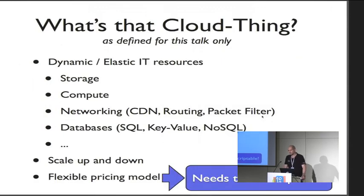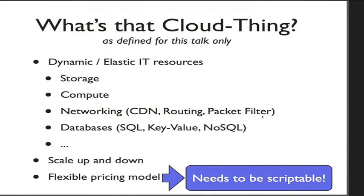Before we actually talk about Boto, two other little things. The first one is — humans like abstractions, so this word cloud is kind of a buzzword, and different people have different opinions of what it really means. So I defined it for this talk only. What I mean by that is that you have dynamic, or in AWS speak, elastic IT resources — that can be something like storage, compute such as virtual hosts, or networking. If you need a content delivery network, it's just there waiting for you.